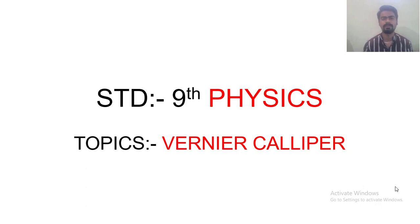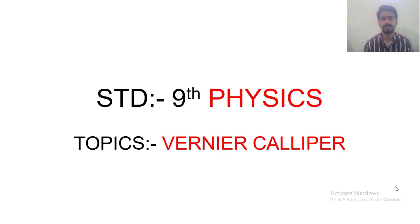Let me tell you why we need a Vernier Caliper. When we want to measure the length of a particular object, generally we use a scale or meter scale which has an accuracy of about 0.1 centimeter or 1 millimeter. But using a Vernier Caliper you can get an accuracy of 0.01 centimeter, that is 0.1 millimeter.